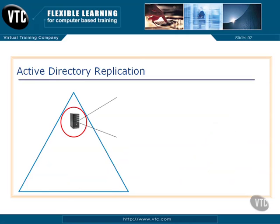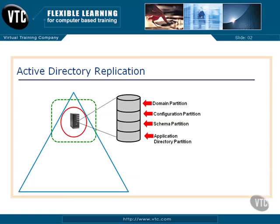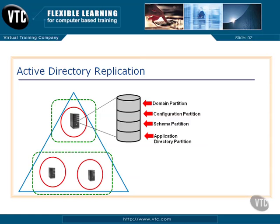We've got an Active Directory domain controller on a server with our four partitions just like before, but now we put that server into a site. By default it joins the default first site, but once we separate them, we have to create subnets and so forth. We can create two separate sites with computers in those sites, but replication will never take place between the two sites until we create a site connector between them. That's how we control replication in Active Directory.